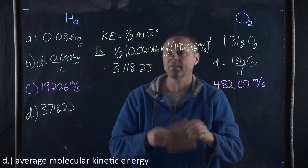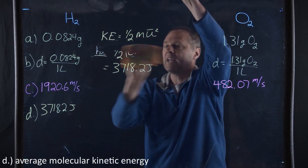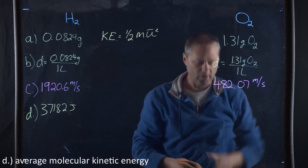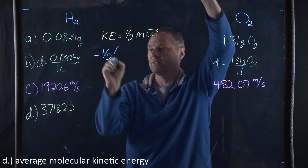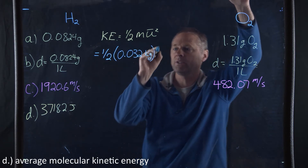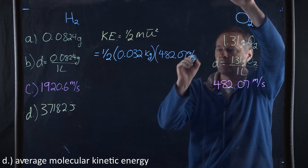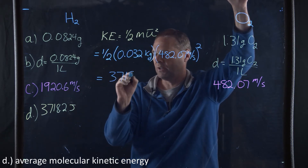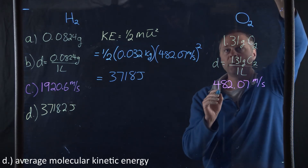We can do the exact same calculation for oxygen. That's ½ × 0.032 kg × (482.07 m/s)². Going through that calculation, we end up getting 3,718 joules — the exact same kinetic energy as we got for hydrogen.